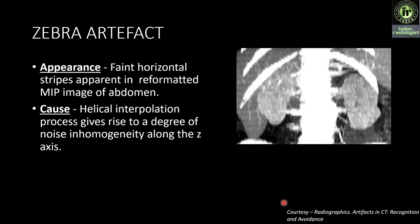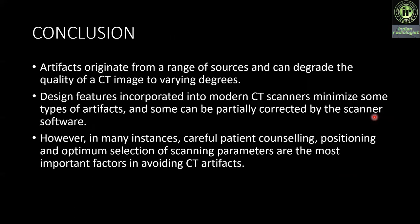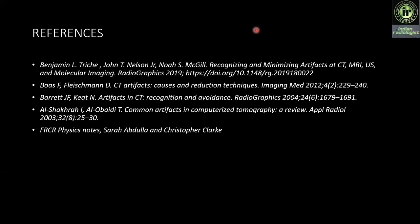Coming to the last artifact, zebra artifact: horizontal stripes are apparent in reformatted images of the abdomen. Cause: the helical interpolation process gives rise to a degree of noise inhomogeneity along the Z axis. Conclusion: artifacts originate from a range of sources and can degrade the quality of a CT image to varying degrees. Design features incorporated into modern CT scanners minimize some types of artifacts and some can be partially corrected by the scanner. However, in many instances, careful patient counseling, positioning, and optimum selection of scanning parameters are the most important factors in avoiding CT artifacts. These are my references. Thank you.